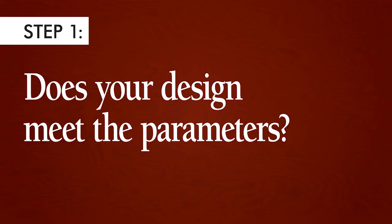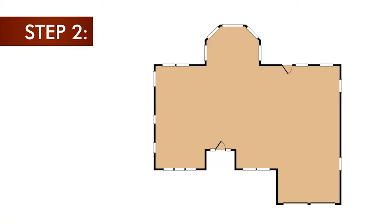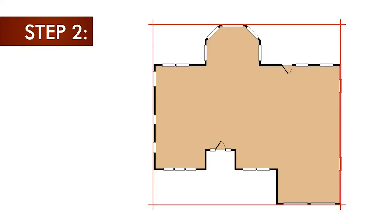Here's how it works. There are four steps. Step one is simply to assure that your design meets the parameters to use the APA simplified bracing method. In step two, you would draw a rectangle around each plan of the home, and from a table determine the amount of bracing required on each side of the rectangle.